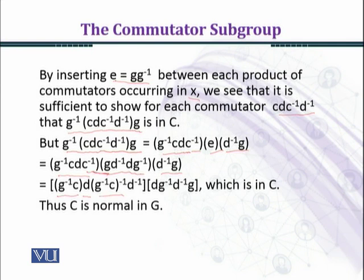We are forming our commutator where the first element is g^-1c and the second element is d. Then we take the inverse of g^-1c and then the inverse of d to make a commutator.